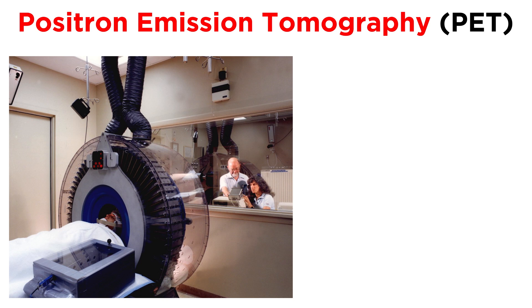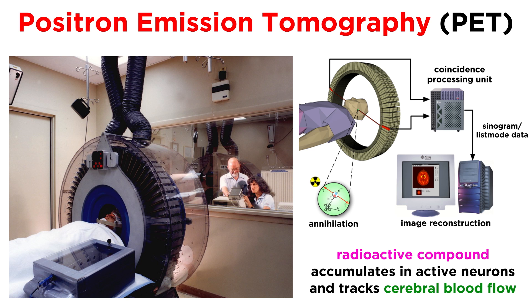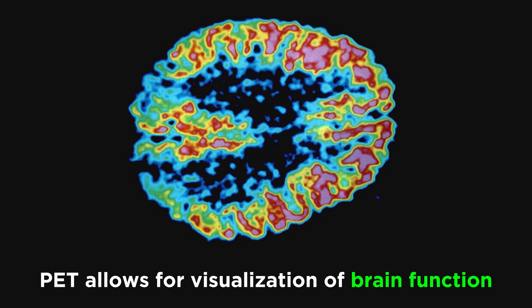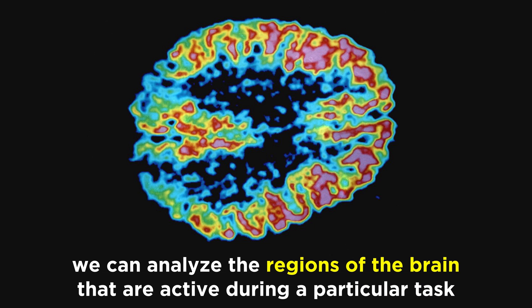Much more relevant to psychology was the development of positron emission tomography, or PET. This utilizes a radioactive compound which is injected into the neck and accumulates in active neurons, tracking cerebral blood flow. In this way, PET allows for the visualization of brain function. Analyzing the regions of the brain that show activity while a person performs a specific task tells us what part or parts of the brain are involved in the execution of that task.